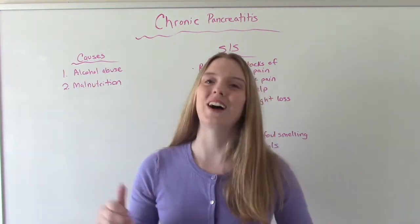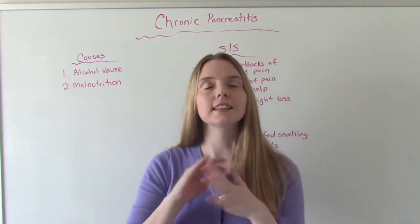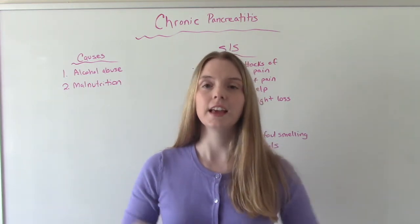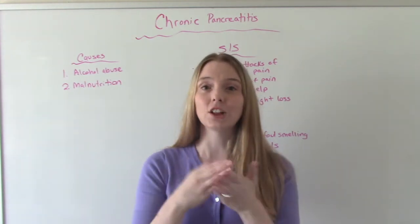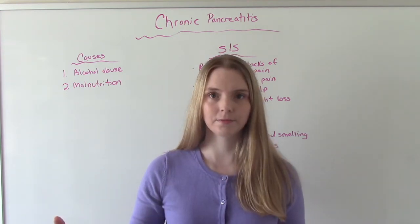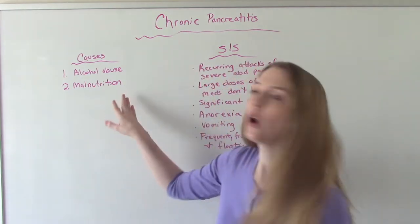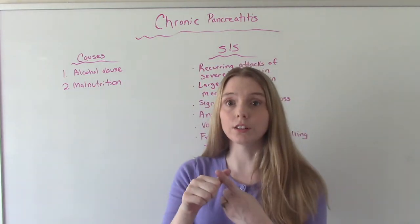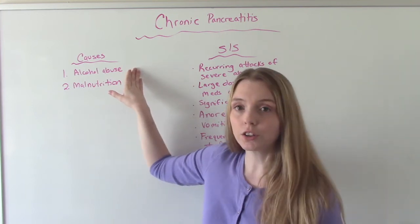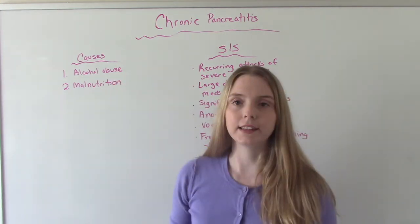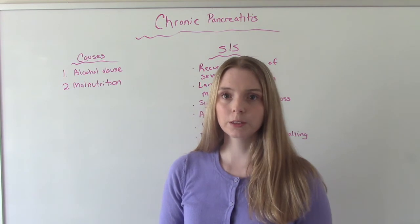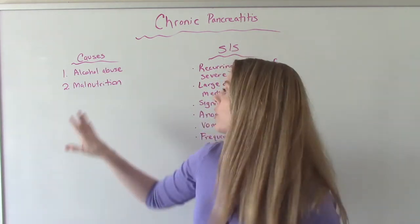I also wanted to talk about chronic pancreatitis and how it's a little different. There are lots of similarities to acute pancreatitis, but to be chronic, it has to last longer than six months. For causes: in acute pancreatitis the main causes were gallstones, alcohol, and infection. In chronic pancreatitis, the most common cause — especially in the Western world — is long-term alcohol abuse, while in other parts of the world the cause is more often malnutrition.